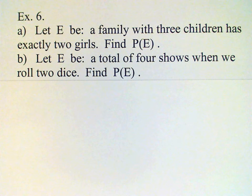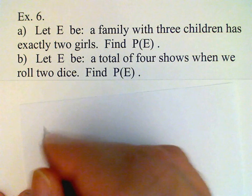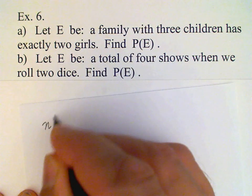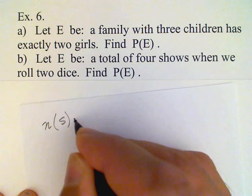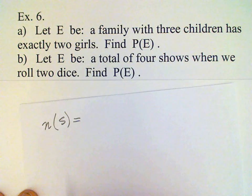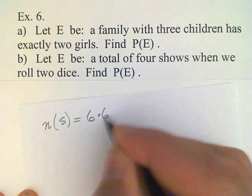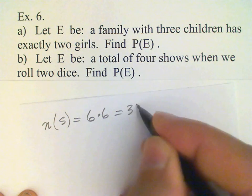Okay, next example. Let E be the event that a total of four shows when we roll two dice. Okay, so I'll remind you, in rolling two dice, the number in the sample space, since there are six possibilities for each die, is six times six, or thirty-six.